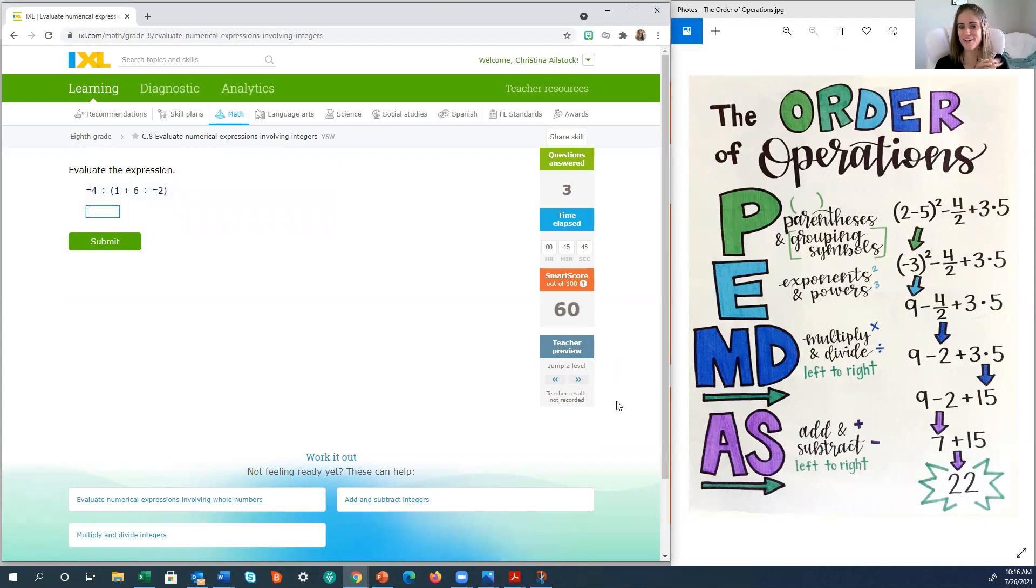Alright, we will do one final example after we verify it's correct. Alright, here we go. Finally, something with parentheses. Which means I kind of already gave that away. We have parentheses, don't we? Alright, negative 4 divided by in parentheses. So the quantity of is how you would pronounce that. 1 plus 6 divided by negative 2.